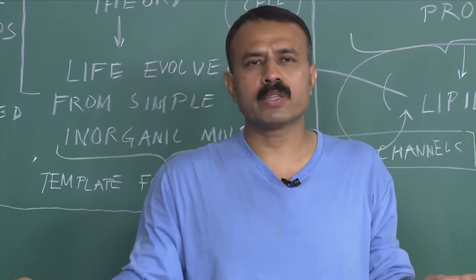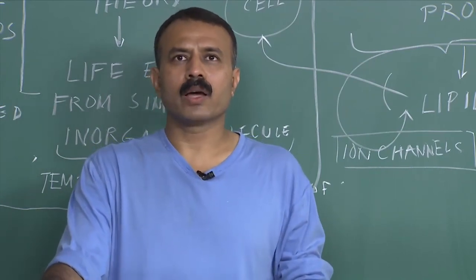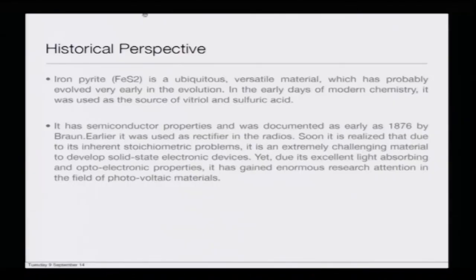I am not going to get into device development in this section, but I will give you a glimpse of what we know about it. From a historical perspective, iron pyrite is a ubiquitous molecule. In fact, iron pyrite is available all over the place — especially if you are walking by the road near a drain. If you poke slightly underneath where there is a lack of oxygen, you will see iron pyrite present there. It is a versatile material which probably evolved very early in evolution — at least four to six billion years ago when the earth was in a very hostile environment.